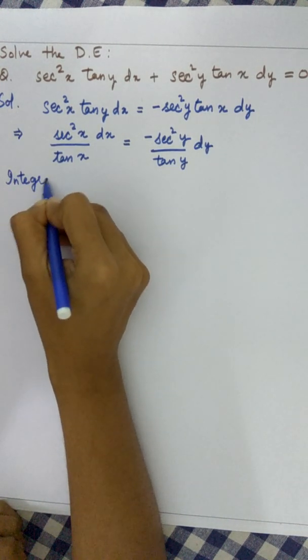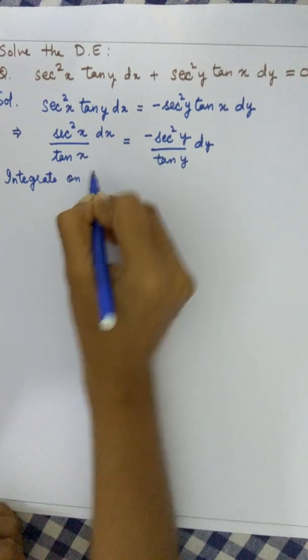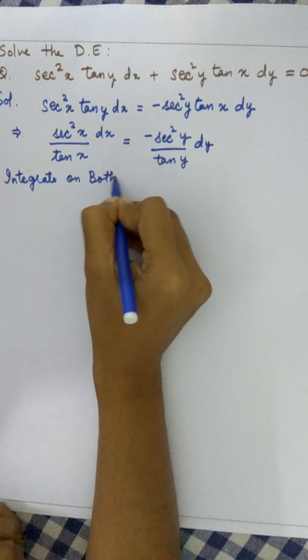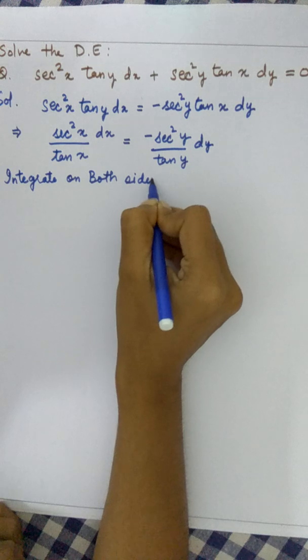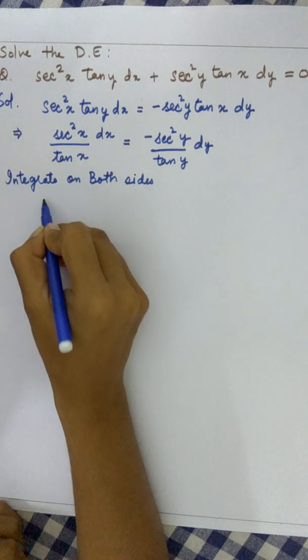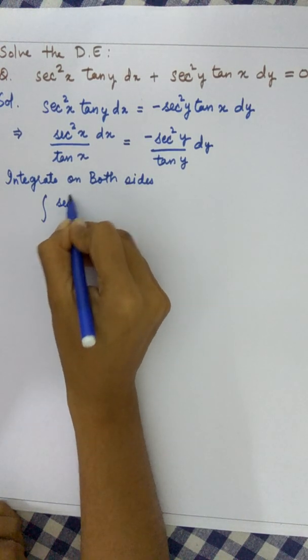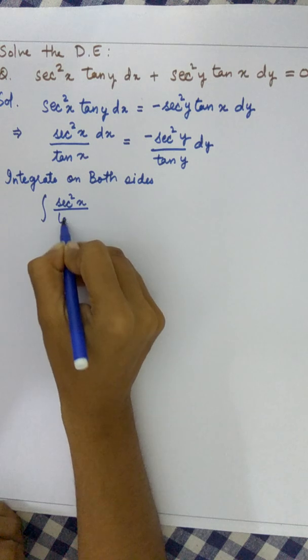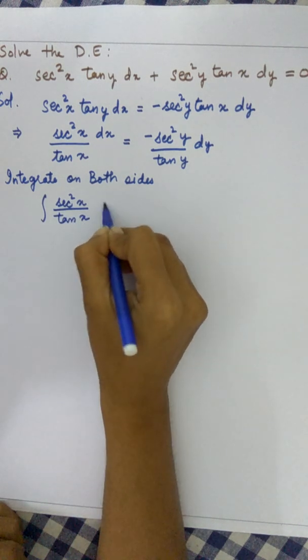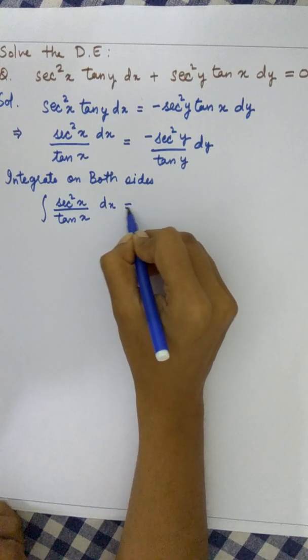Now to get the solution, we integrate both sides. We get the integral of sec²x dx over tan x equals minus the integral of sec²y dy over tan y.